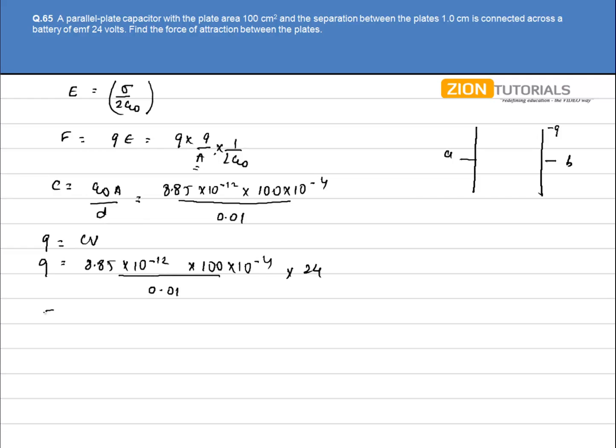So force will be q² that is 8.85 × 10⁻¹² × 100 × 10⁻⁴ × 24 by 0.01 whole square into 1 by A that is 100 × 10⁻⁴ into 1 by 2 epsilon not.